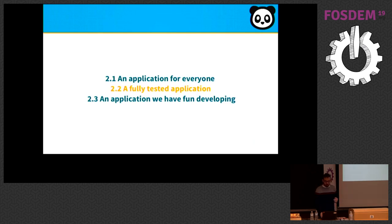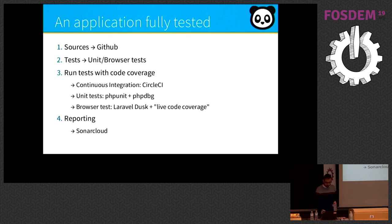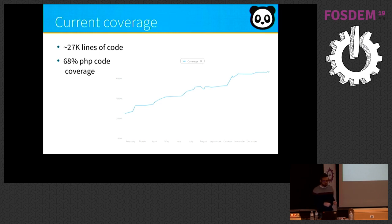We also want a fully tested application. What you need is obviously tests, and you want to run them with code coverage and reporting. In Monica we have unit tests and browser tests. We use CircleCI. The unit tests use PHPUnit and PHP DBG. The browser tests use Laravel Dusk. We have live code coverage on our server, and for reporting we use SonarCloud — a very useful tool. Currently we have 68% PHP code coverage. As you can see, we hit a peak and the next percentage points are difficult to gain, but we can do it.